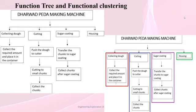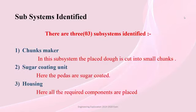Function clustering: there are 4 different functions and each function is clustered individually. Subsystems identified: there are 3 subsystems — chunks maker, sugar coating unit, and housing.